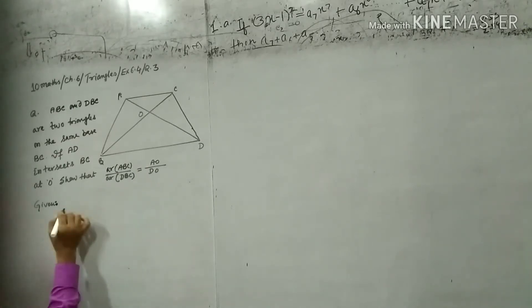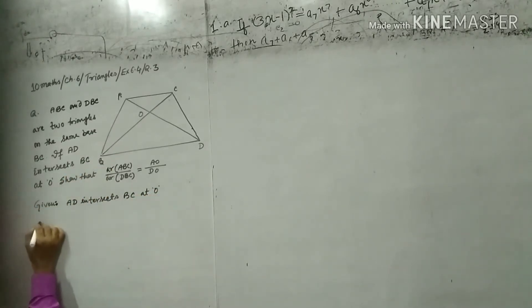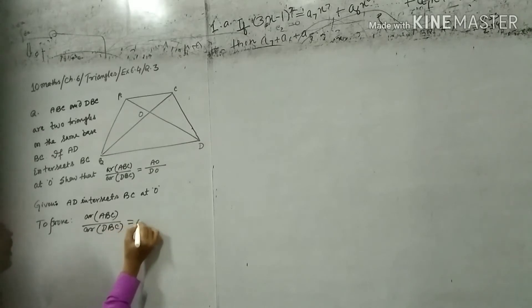So given that AD intersects BC at O. To prove: area ABC over area DBC equals to AO upon DO. Clear.